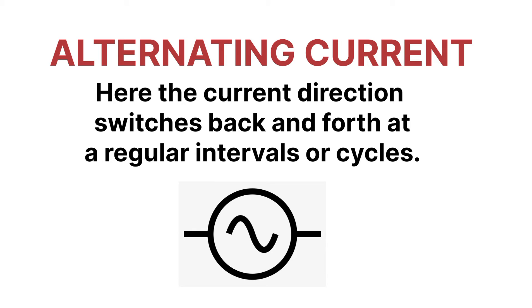Next is alternating current. AC is a type of electric current in which the direction of flow of electrons switches back and forth at regular intervals or cycles. You can also see the symbol for alternating current.